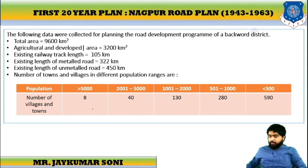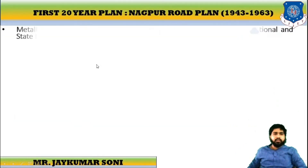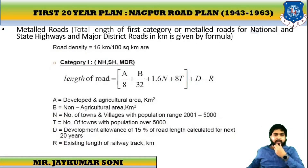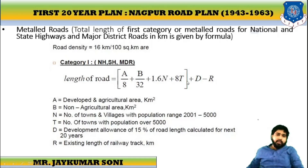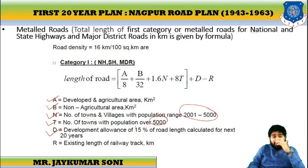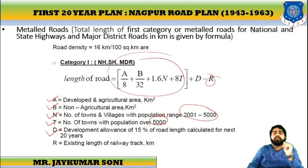Now for the second example. Metal road — this is the total length of the first category of road. The equation is: A/8 + B/32 + 1.6n + 8t + D − R, where A stands for agricultural area, B stands for non-agricultural area, S stands for towns with population between 2,000 and 5,000, T for towns with population over 5,000, and D is 50% development allowance.